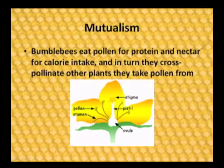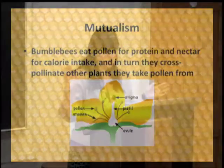Bumblebees have a symbiotic relationship with plants called mutualism. The bumblebees eat pollen for protein and nectar for calorie intake, and they cross-pollinate other plants they take pollen from. The stamen is the male reproductive part of the plant, and that is where the bees collect pollen. Because the pollen is in their pollen buckets and also on the fuzzy parts of their body, it is then transferred to the stigma, the female reproductive part of the plant. This makes bees the most effective pollinator known to our world.